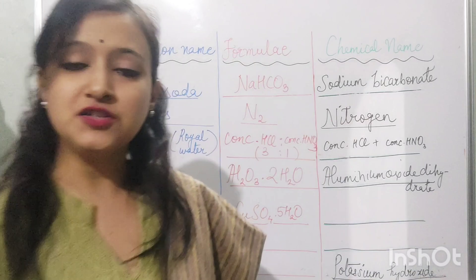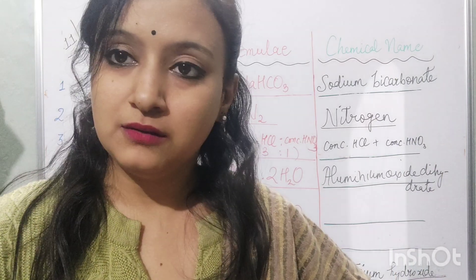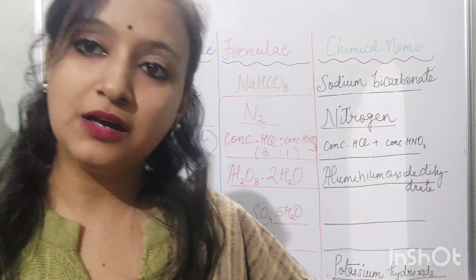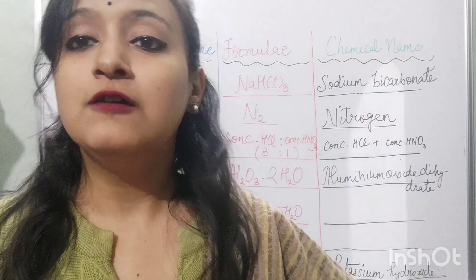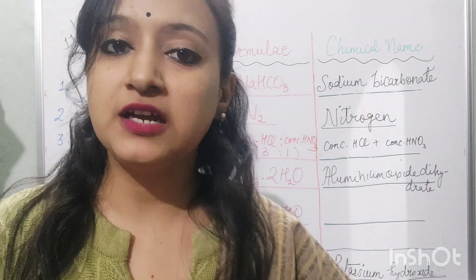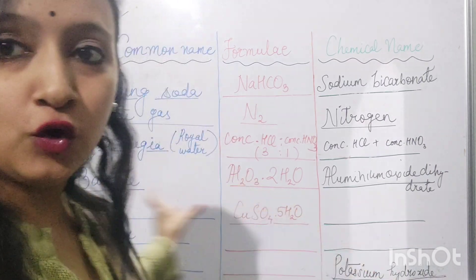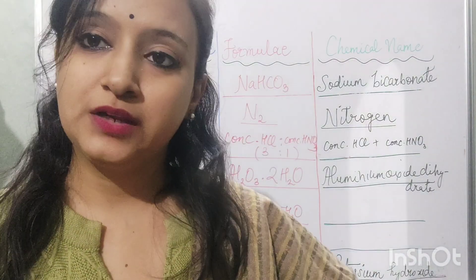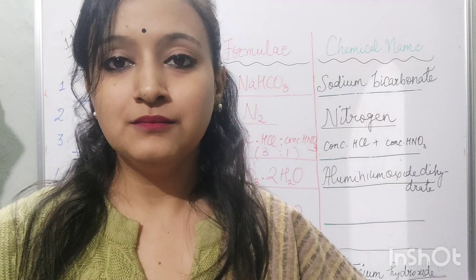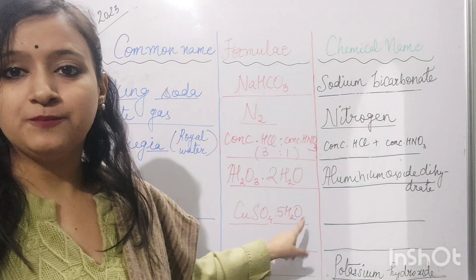Interestingly, the common name of this chemical compound is related to its place of origin — where it was first discovered. The name 'bauxite' has been derived from the town in France where it was first discovered. The name of that town was Les Baux. So, from the name of the town Les Baux, this ore of aluminium gets its common name — bauxite.